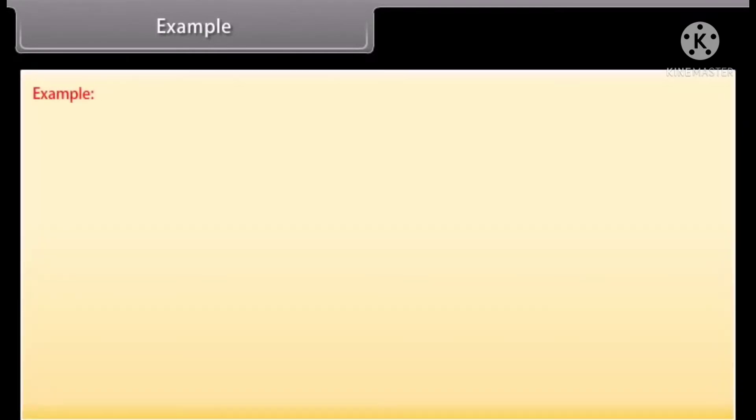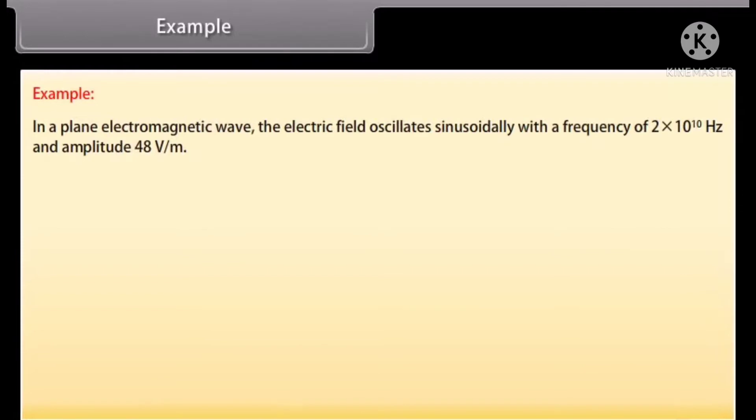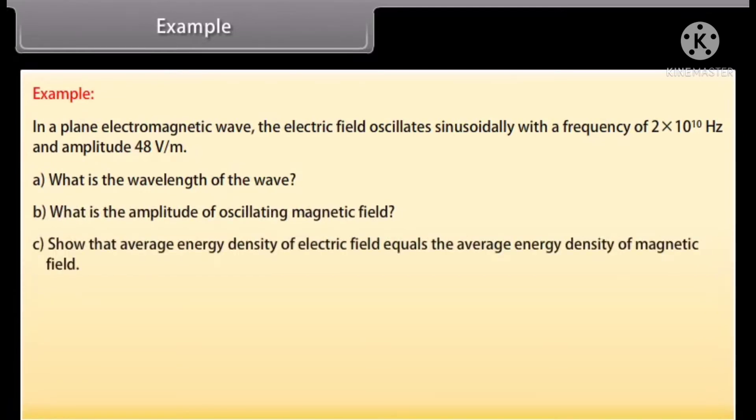Example: Let's take an example of electromagnetic waves. In a plane electromagnetic wave, the electric field oscillates sinusoidally with a frequency of 2 into 10 raised to the power 10 hertz and amplitude 48 volt per meter. What is the wavelength of the wave? What is the amplitude of oscillating magnetic field? Show that average energy density of electric field equals the average energy density of magnetic field.